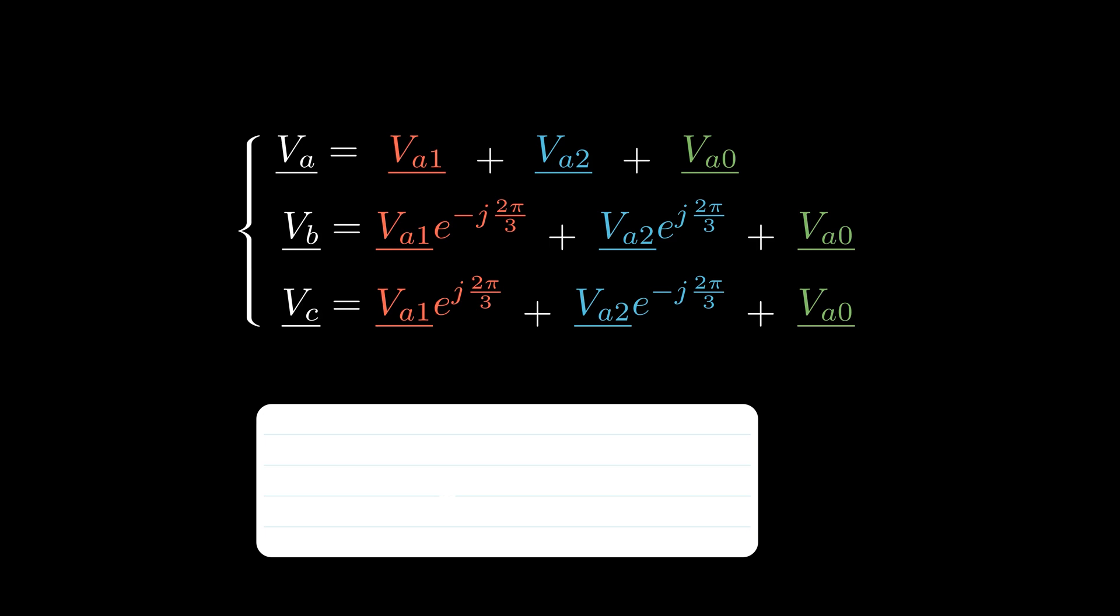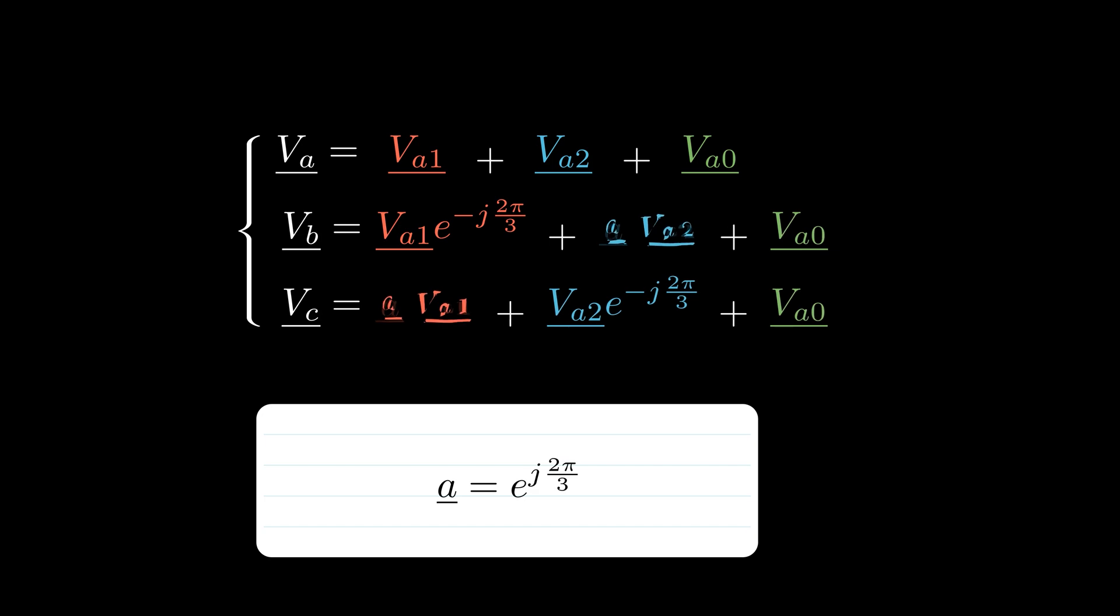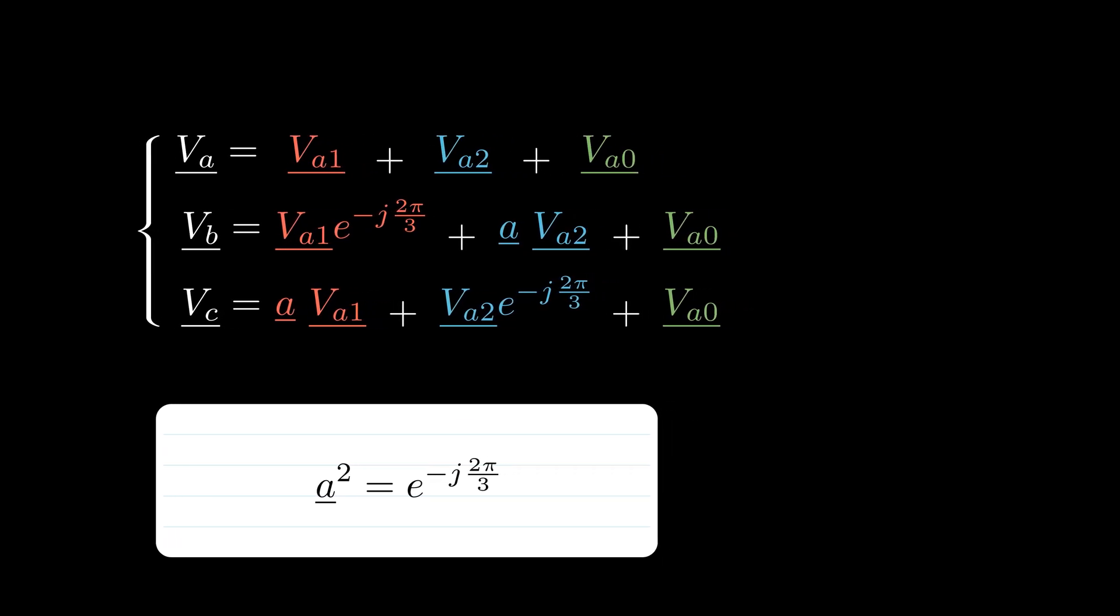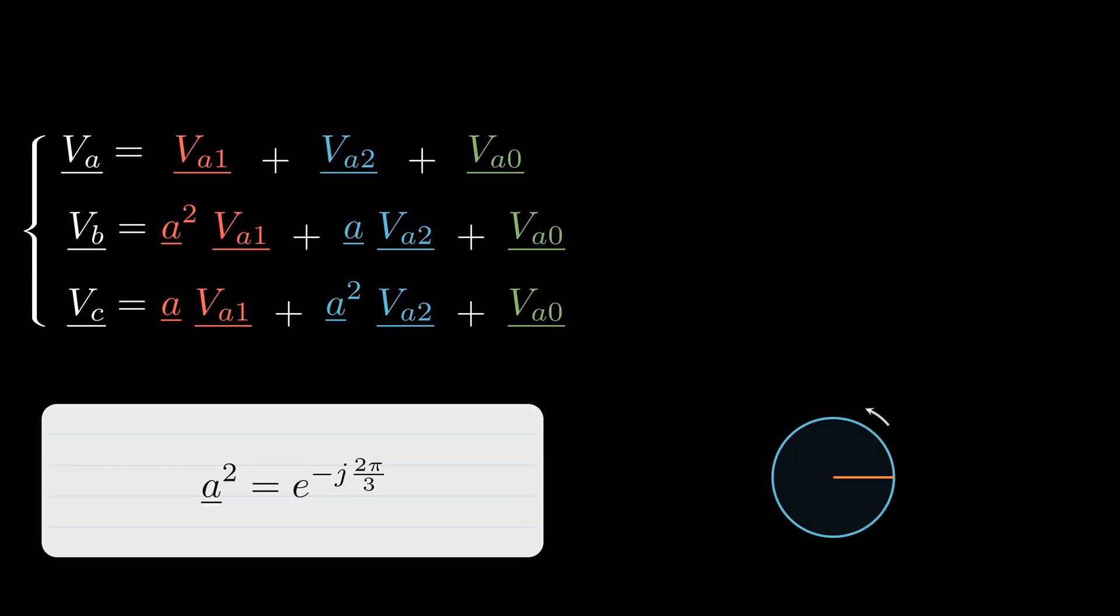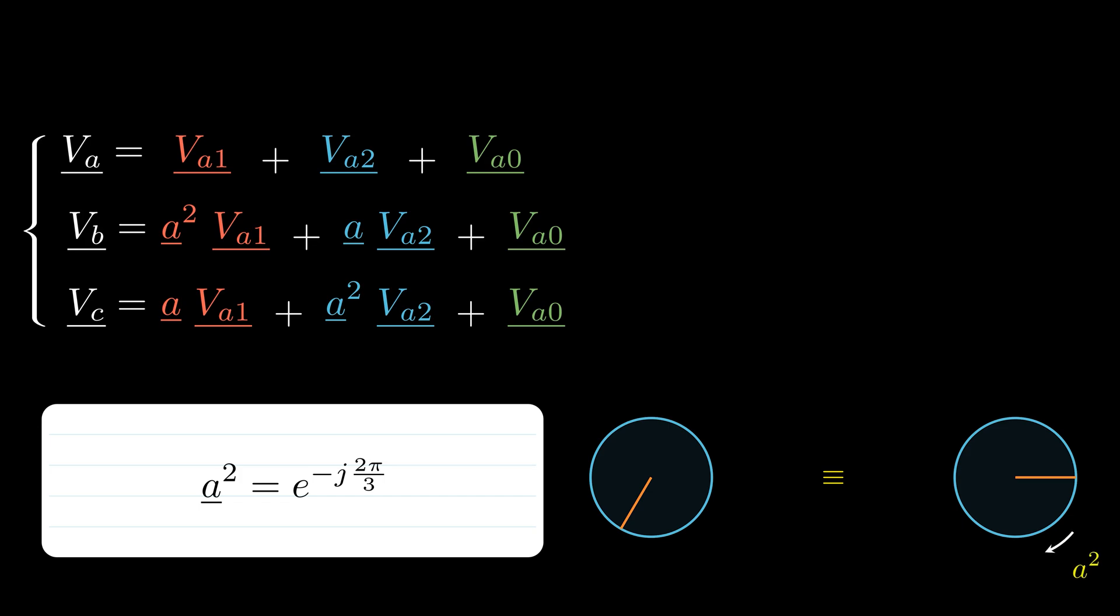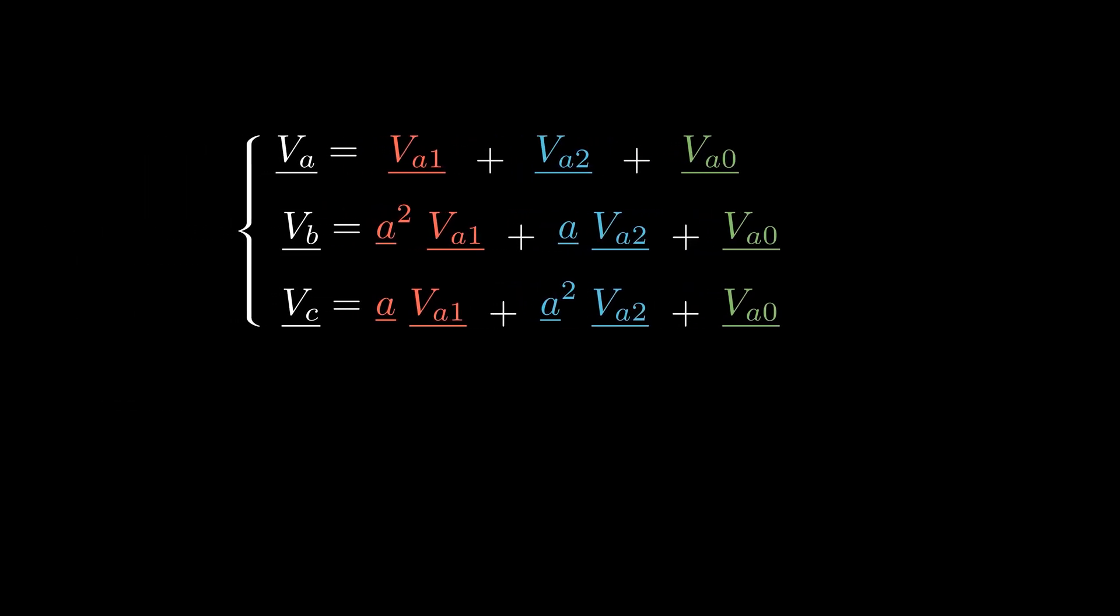To further simplify the formulation, we introduce an operator a, representing a rotation of 2π/3 in the complex plane, and substitute it into the equations. Now observe what happens when we calculate a squared. We express the exponent as 6 minus 2, then apply exponential rules to write it as a product of two complex numbers. The first term represents a 2π rotation, which is equivalent to multiplying by 1, so we get a squared is exponential of j times minus 2π/3. This makes sense since two counterclockwise rotations of 2π/3 should be equivalent to a single clockwise rotation of 2π/3.